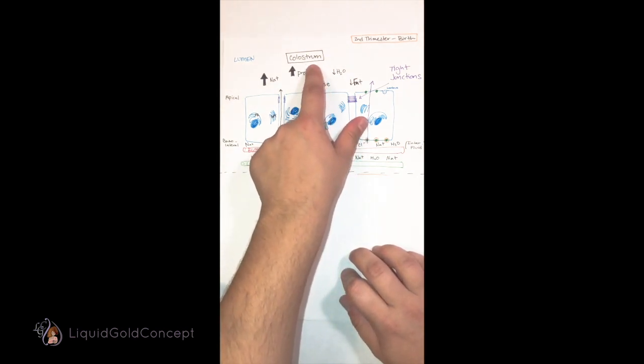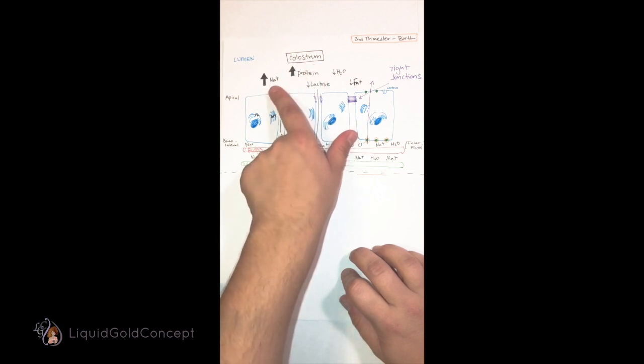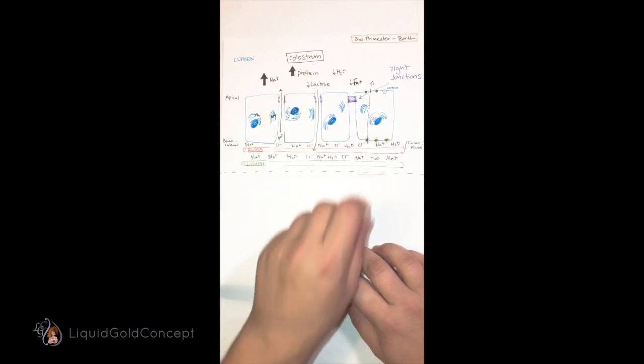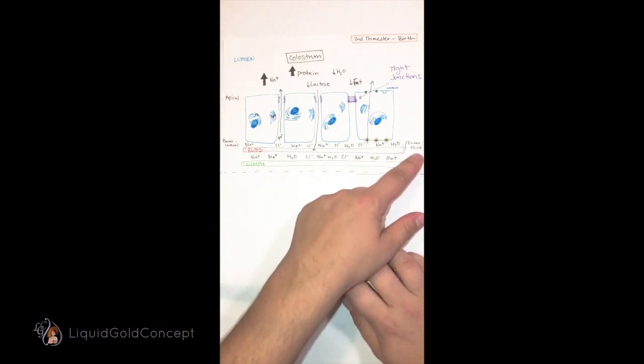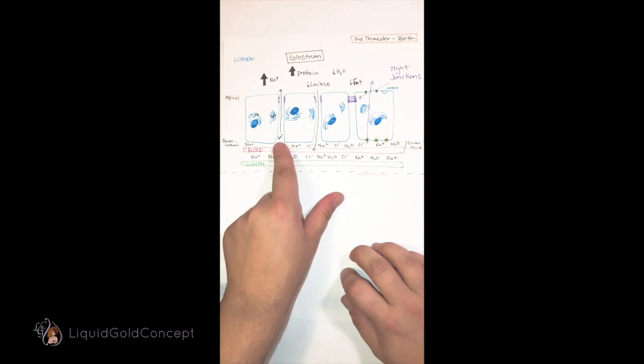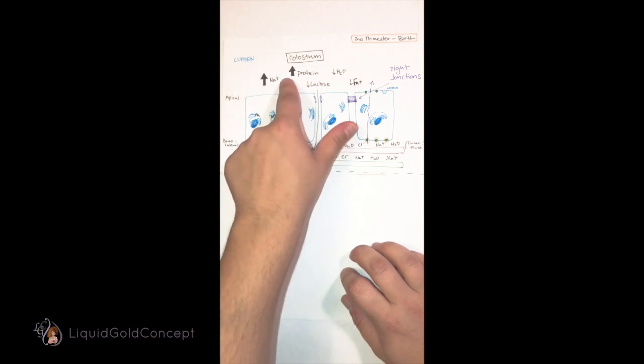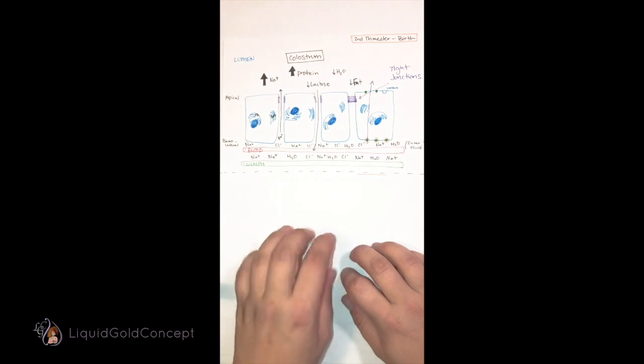that first milk that moms start to produce in the second trimester, is very high in sodium. That's because our other body fluids are also high in sodium, like our blood and our interstitial fluid, and that same sodium can easily travel in between the cells and into the colostrum, which is in the lumen space.